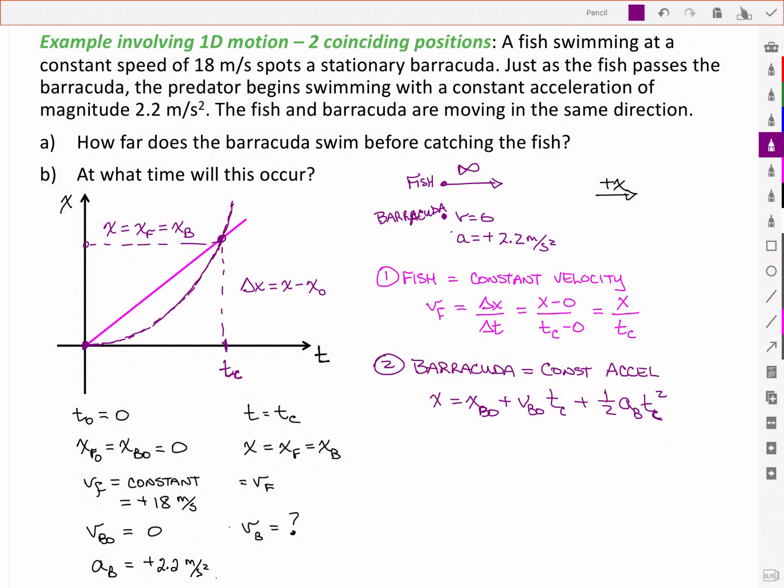But we'll do a little inventory here to recognize that its initial position is zero, its initial velocity is zero, and we know its acceleration. And so we're left with two unknowns, the time and the position.